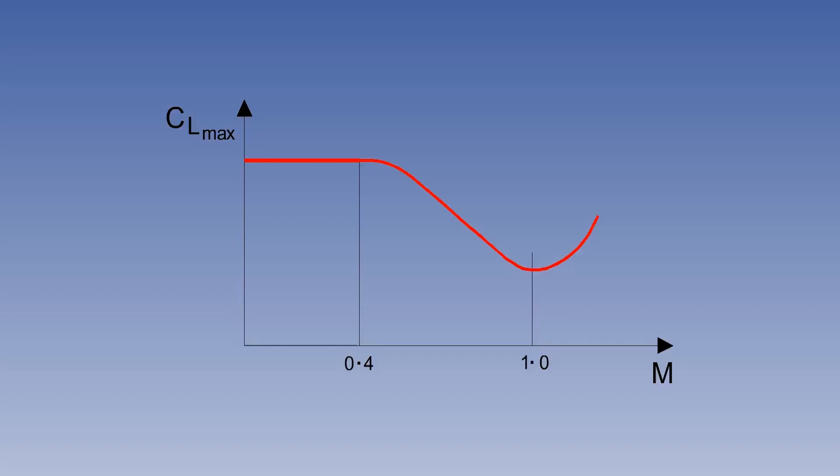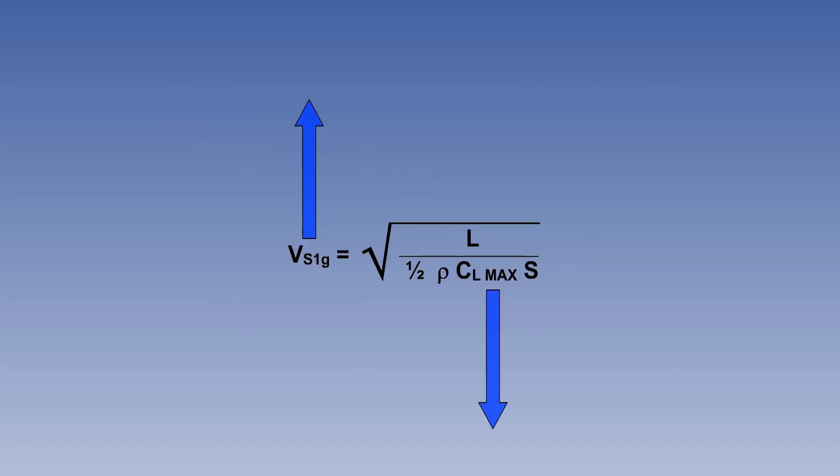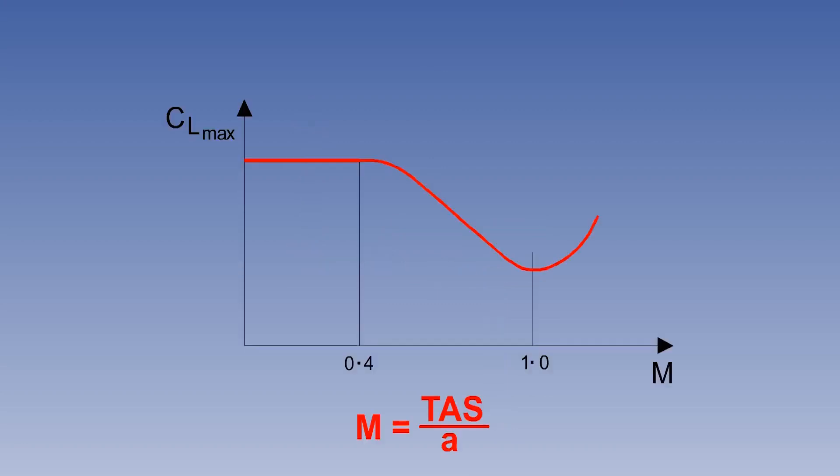Above Mach 0.4, CL max decreases, as shown in the diagram on screen. According to the 1G stall formula, a drop in CL max will increase the stalling speed. At a constant EAS, TAS will increase. Also, outside air temperature, or OAT, drops with increasing altitude, causing the local speed of sound to decrease.